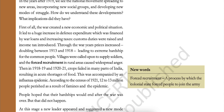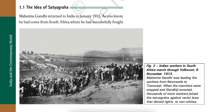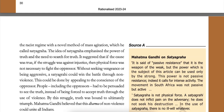Forced recruitment: a process by which the colonial state forced people to join the army. People hoped that their hardship would end after the war was over, but that did not happen. At this stage, a new leader appeared and suggested a new mode of struggle — the idea of Satyagraha. Mahatma Gandhi returned to India in January 1915. He had come from South Africa, where he had successfully fought the racist regime with a novel method of mass agitation, which he called Satyagraha.